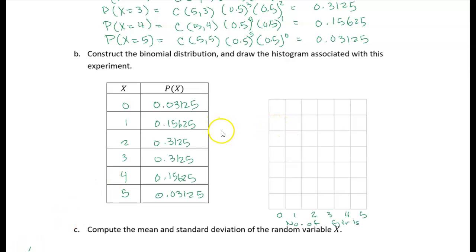All right, so I have my tabular probability distribution, and now I'm going to do my histogram. Now, I want to look at the range of what we've got going on here. So we're going to have anywhere from 0 up to 0.3.